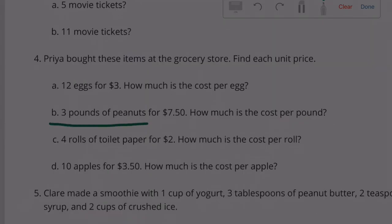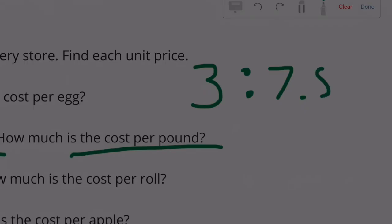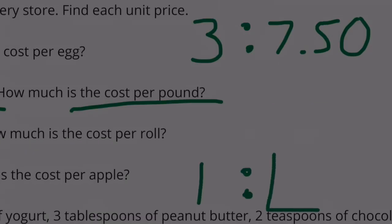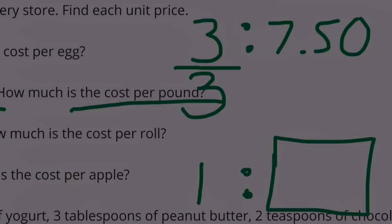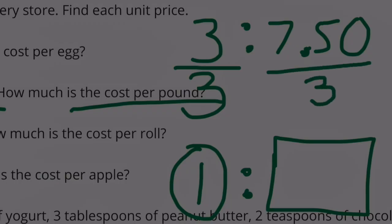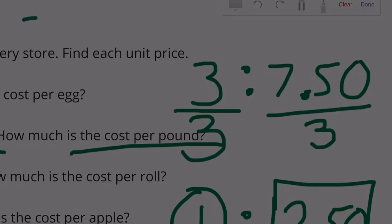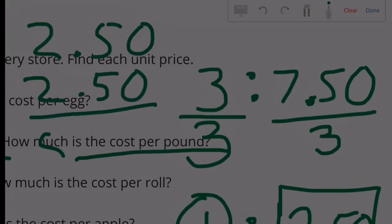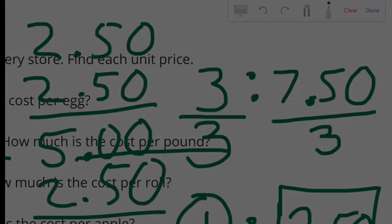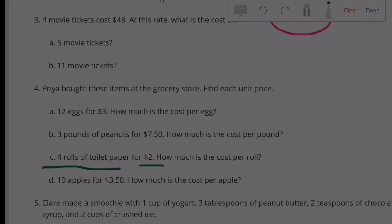(b) Three pounds of peanuts for $7.50. We need to get this down to cost per pound. Divide both sides by three: three divided by three equals one, and $7.50 divided by three is $2.50. We can check: $2.50 plus $2.50 is $5.00, and $5.00 plus another $2.50 equals $7.50. So one pound of peanuts costs $2.50.